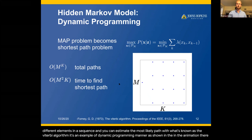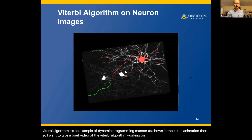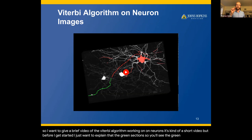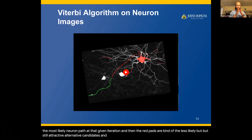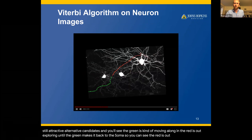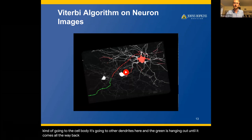I want to give a brief video of the Viterbi algorithm working on neurons. The green sections show the most likely neuron path at a given iteration, and the red paths are the less likely but still attractive alternative candidates. You'll see the green moving along while the red explores until the green makes it back to the soma. You can see the red going to the cell body, exploring other dendrites, while the green hangs out until it comes all the way back to the soma.